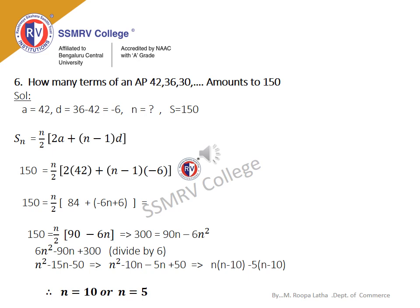Another problem: Here a = 42, d = 36 − 42 = −6, and S = 150. We need to find n. Using Sₙ = n/2 × [2a + (n−1)d]: 150 = n/2 × [2(42) + (n−1)(−6)]. Solving this gives 6n² − 90n + 300 = 0. Dividing by 6: n² − 15n + 50 = 0, which factors as (n−10)(n−5) = 0. So n = 10 or n = 5.